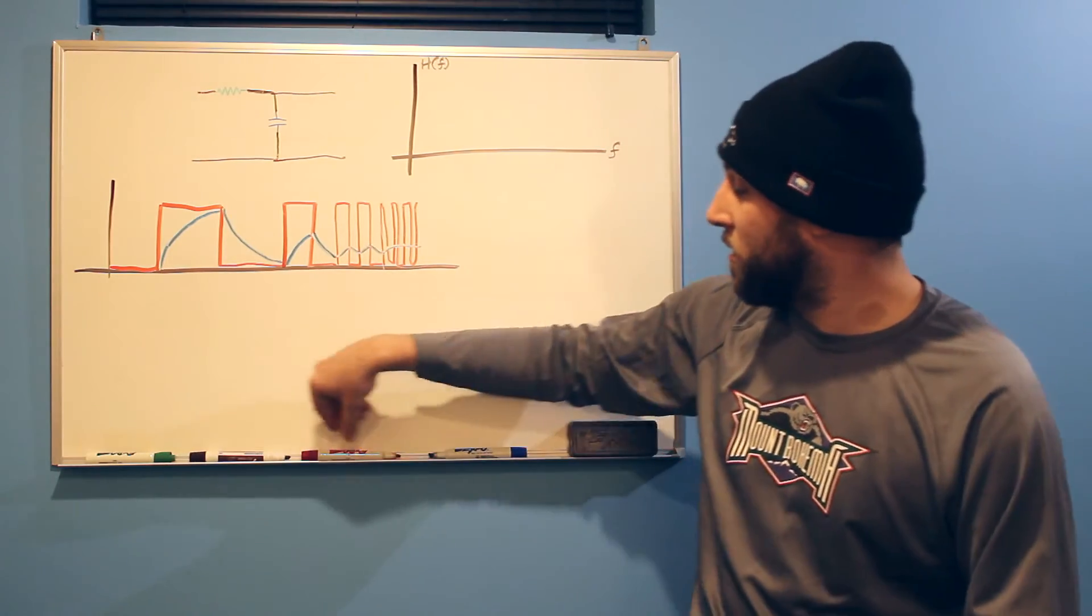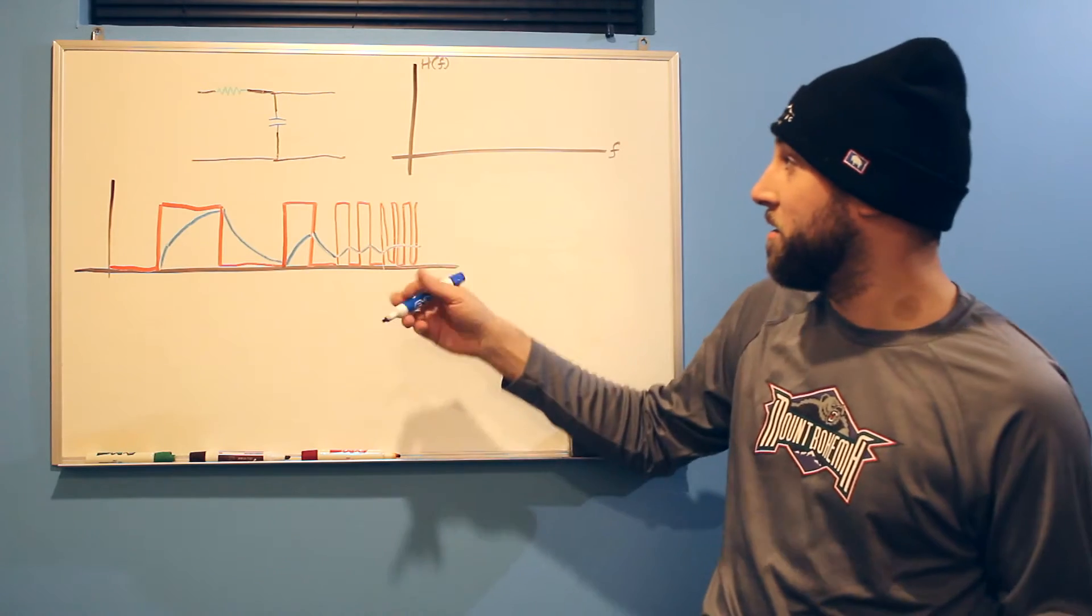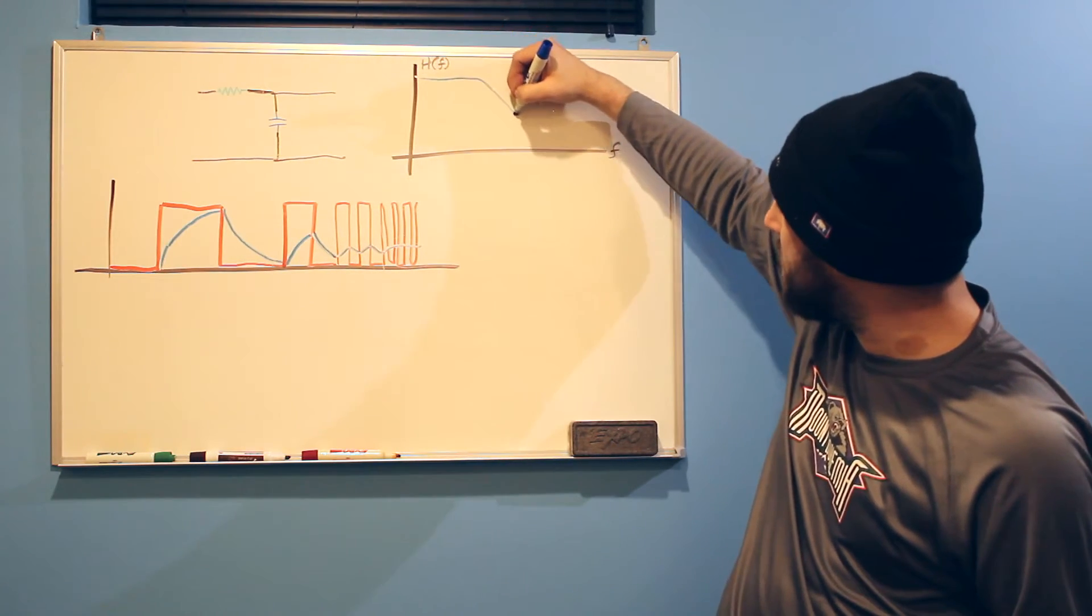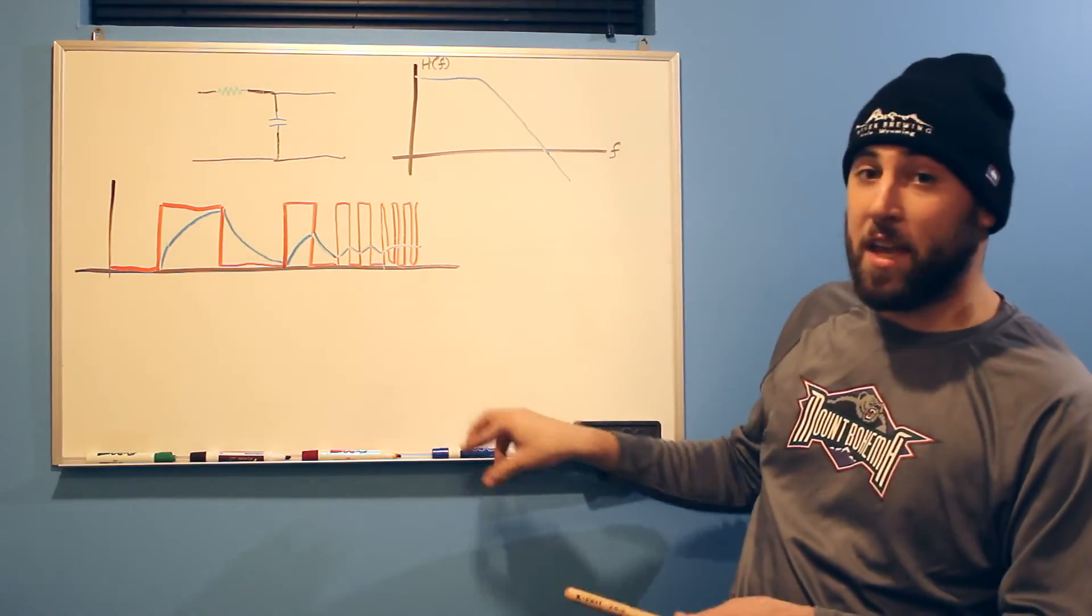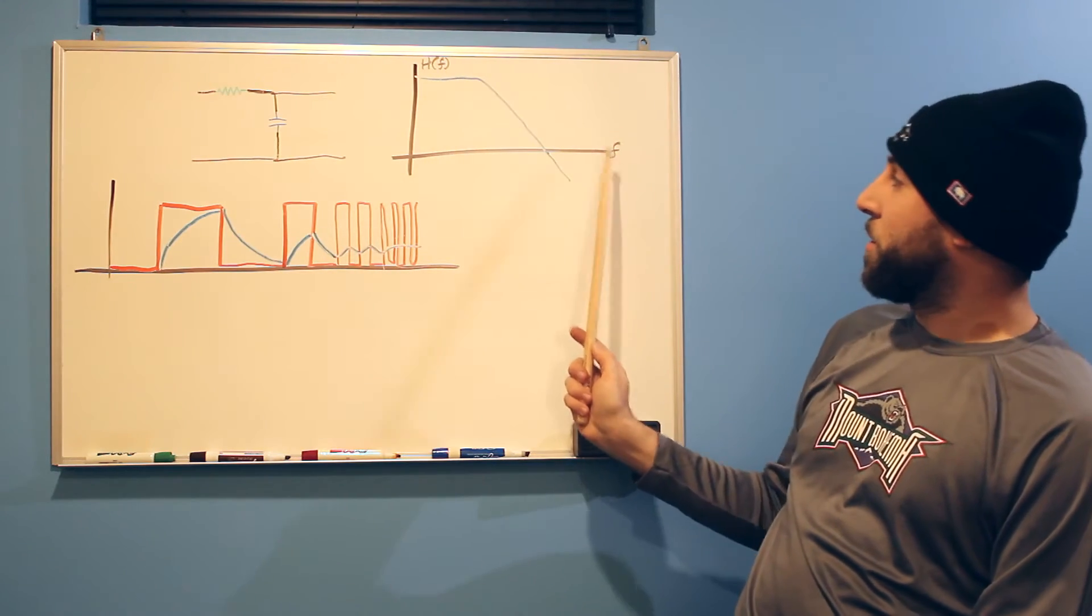So the gain for a passive low pass filter like this is just, it's flat for a little while and then it just tanks. And it just heads south. So this is our gain. So at these frequencies here, this axis is frequency, this axis is gain.